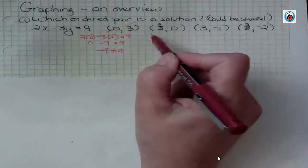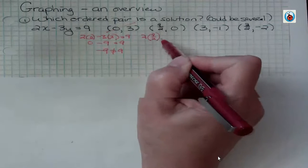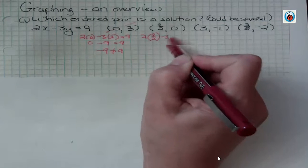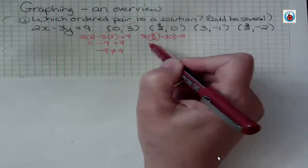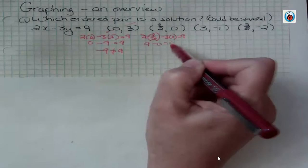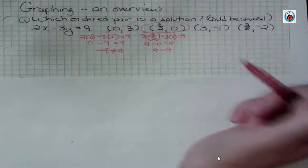What about the second one? Well, the second one I'm saying 2 times 9 halves minus 3 times 0 equals 9. Well, here I get 9 minus 0 equals 9. 9 equals 9, so yes, this is a solution.